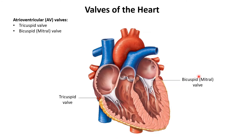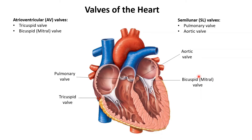The two semilunar valves we're going to be talking about are the pulmonary and the aortic valve. The one in the pulmonary trunk is the pulmonary valve and the one in the aorta is the aortic valve. The AV valves are called so because they connect the atria to the ventricles and the semilunar valves are called so because of their half moon shape.